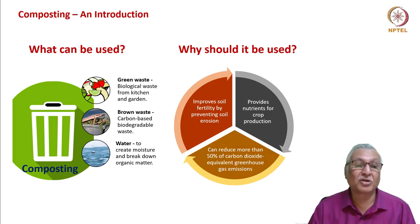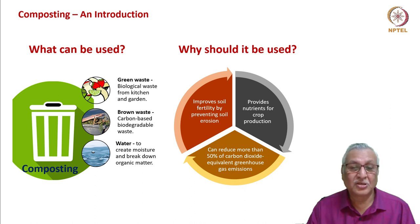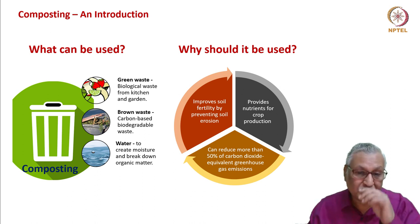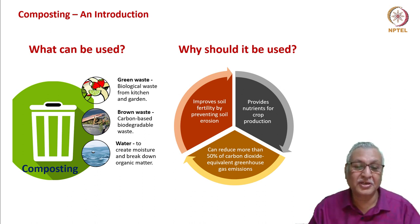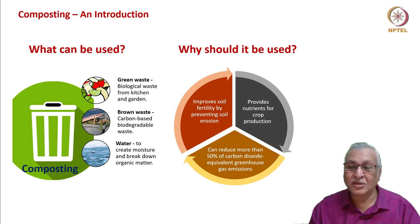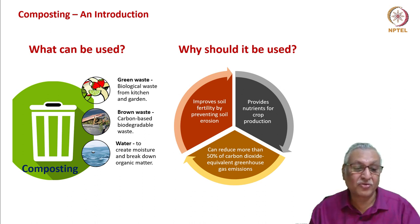If we are able to cut waste at the source through the 3R principle — reduce, reuse, and recycle — that is one great way of reducing waste. Whatever waste is still generated needs to be converted into usable products, and one such product is compost for gardening. Composting applies to green waste (biological waste from kitchen and garden) and brown waste (carbon-based biodegradable waste). Compost improves soil fertility, prevents soil erosion, provides nutrients for crop production, and can reduce more than 50 percent of carbon dioxide equivalent greenhouse gas emissions.